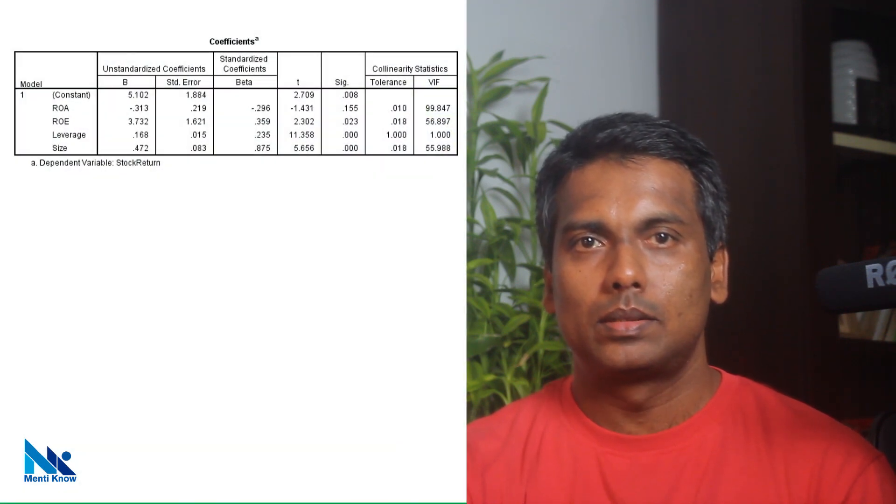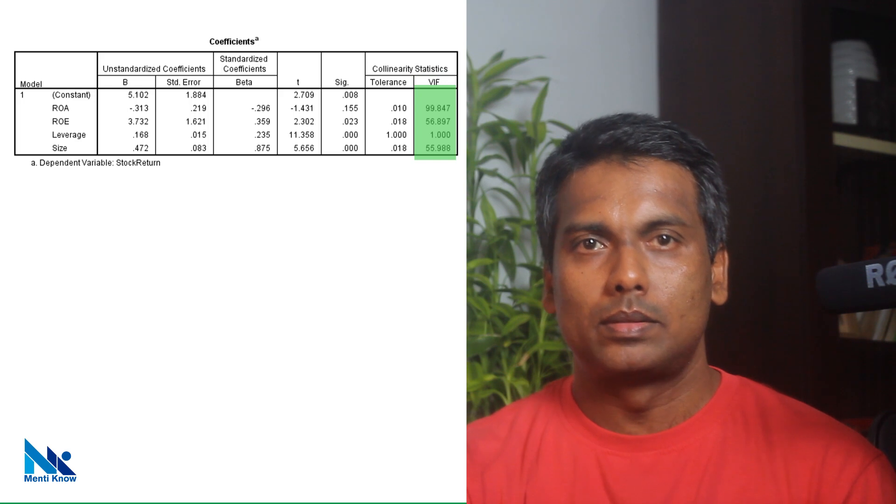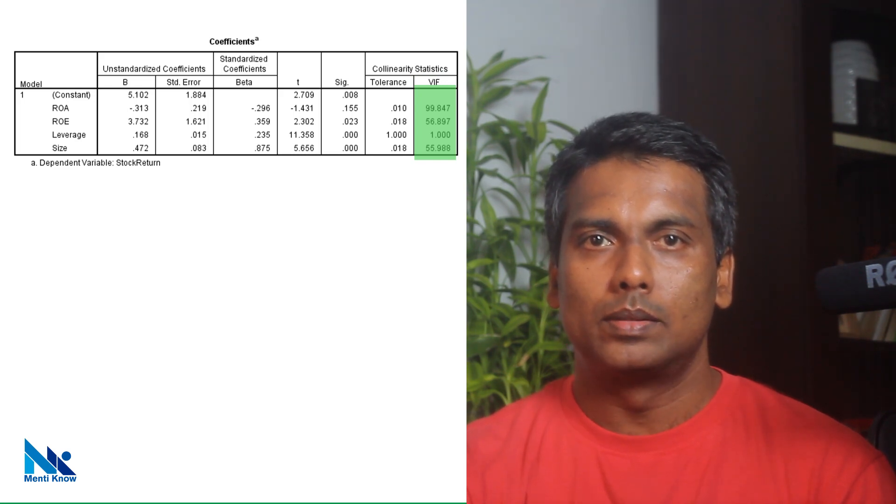One of the easier methods to diagnose multicollinearity is variance inflation factors or VIF. Usually in regression results we can see a VIF value for each independent variable.